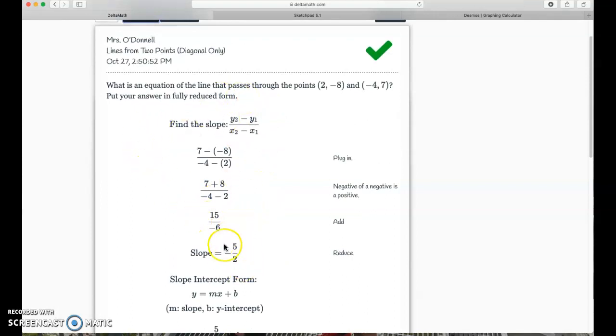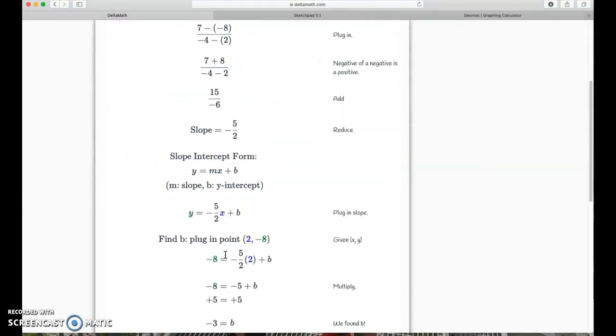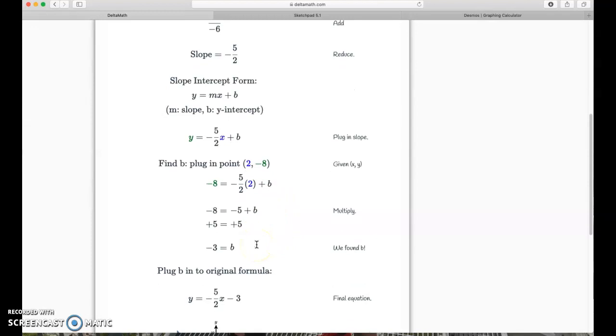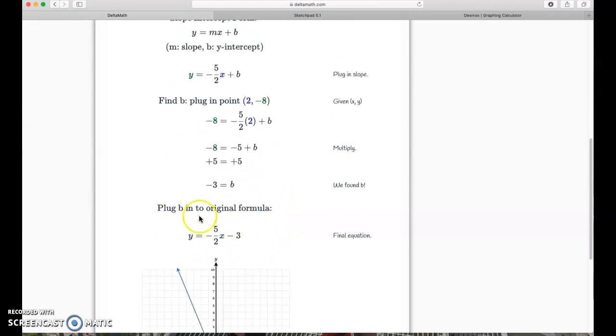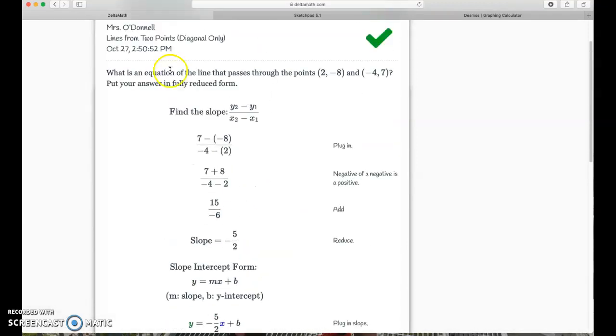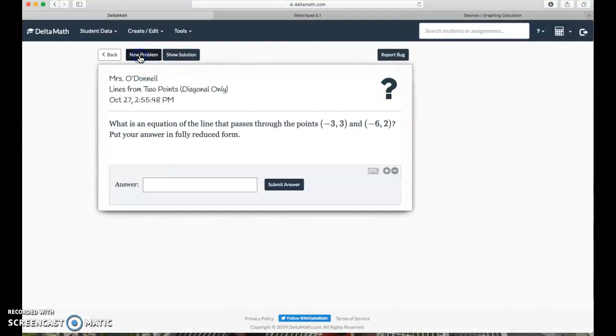But if we're reading through our answer key, right, first they're doing the slope. They found the slope, same way we did. And then over here, they plugged in a point and solved to find the y-intercept. And so they used slope-intercept form, and they checked it by graphing to make sure that it worked, okay? If you want to do it that way, we could do another problem that way.